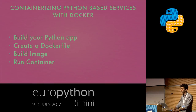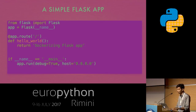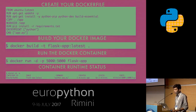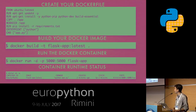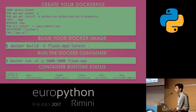Let's move on to how to containerize Python based services with Docker. There are four steps. This is a simple Flask app which, on the root route, will return the string 'Dockerizing Flask app' and start the server on all IP addresses on the local instance. You create your Docker file with all the commands, then build your Docker image with the docker build command, run the Docker container using docker run, and with docker ps -a you will be able to see all Docker containers that are running or not running on a particular machine.